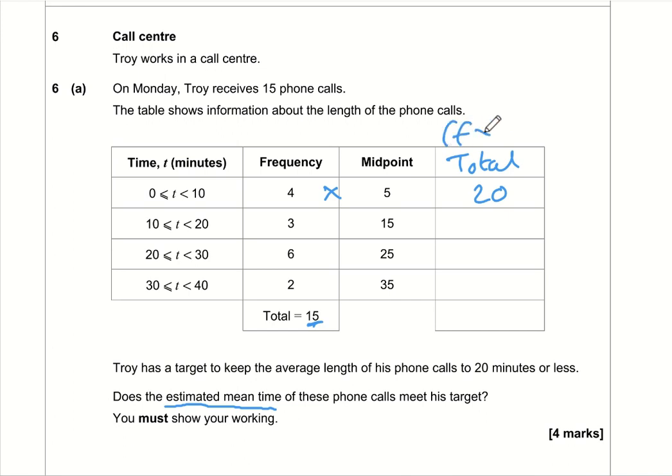We've got 4 phone calls that took an estimated 5 minutes each, so the total duration is 20 minutes. So here we're multiplying frequency by midpoint. 3 times 15 is 45, 6 times 25 is 150, and 2 times 35 is 70. Now we can work out the total of all 15 calls by adding up these subtotals.